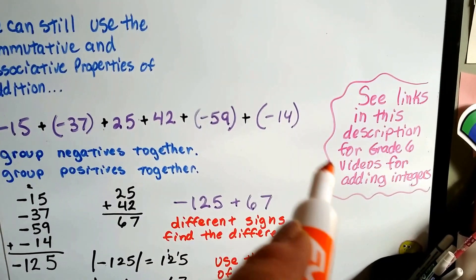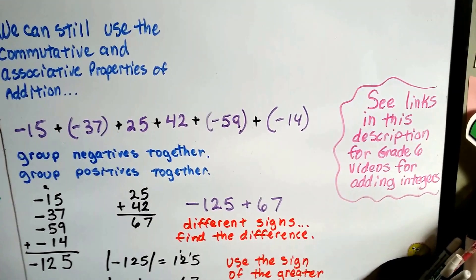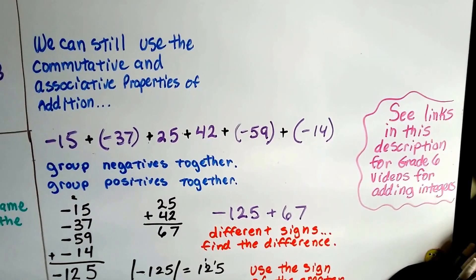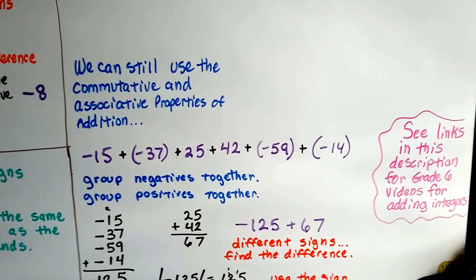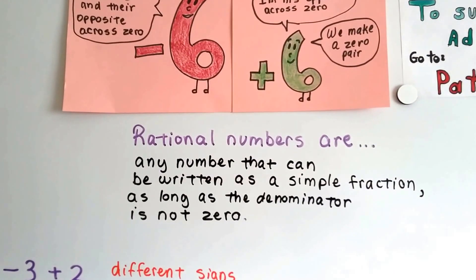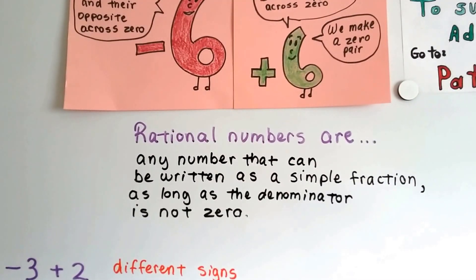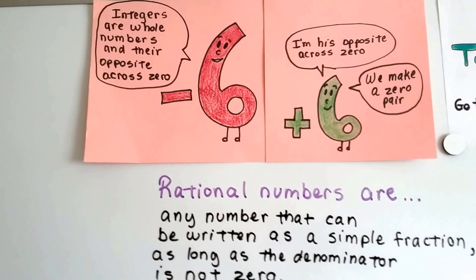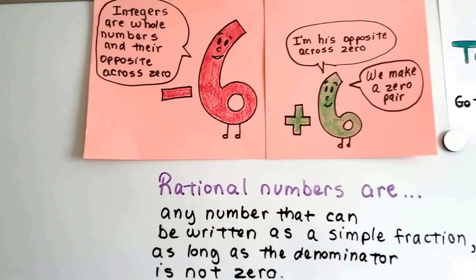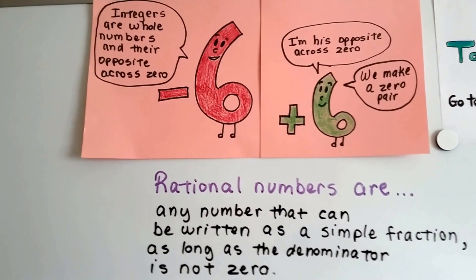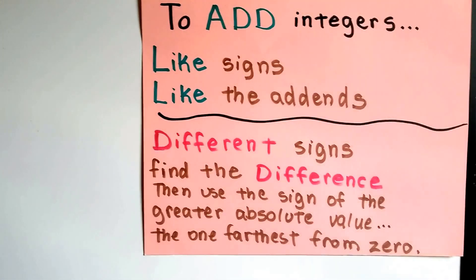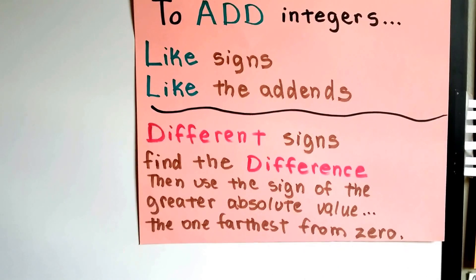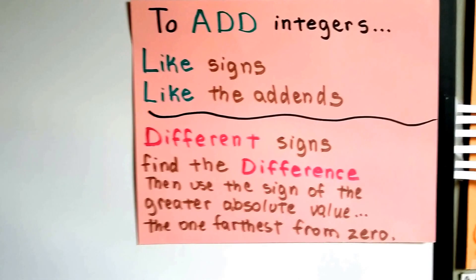There are links in the description for Grade 6 videos on adding positive and negative integers with like and unlike signs — if this was a little confusing, those videos are simpler and easier to understand. Remember: rational numbers are any number that can be written as a simple fraction as long as the denominator is not zero. Integers are whole numbers and their opposites across zero — for example, negative 6 and positive 6 are opposites and both integers. To add integers: like signs means it'll be like the addends; different signs means find the difference and use the sign of the greater absolute value, the one farthest from zero.